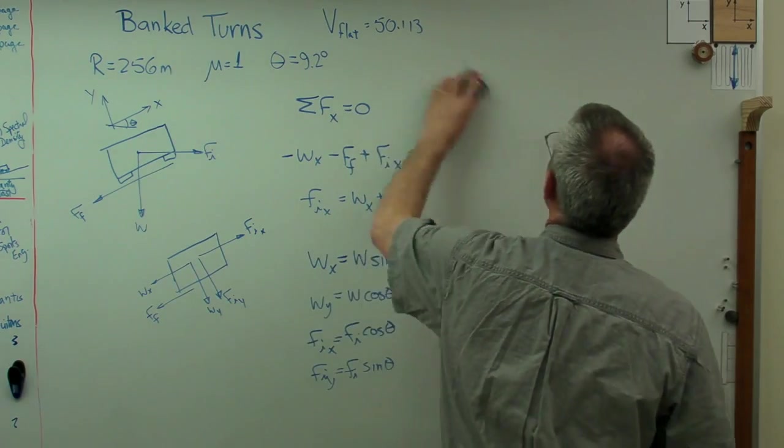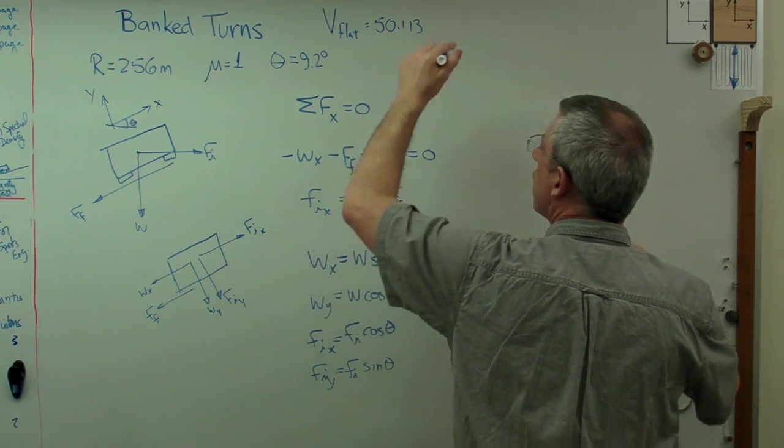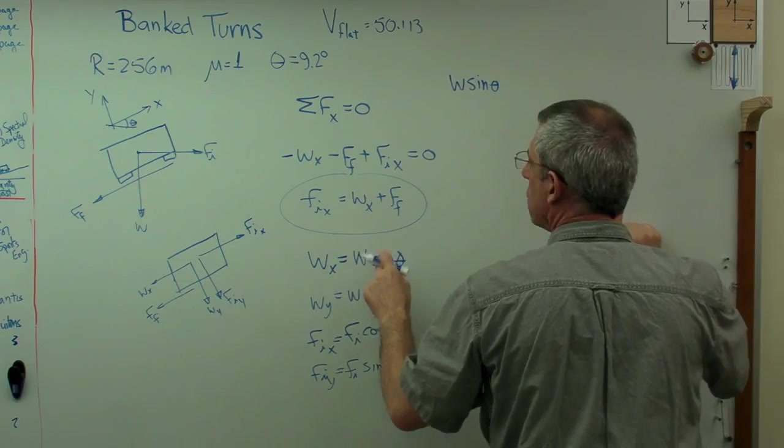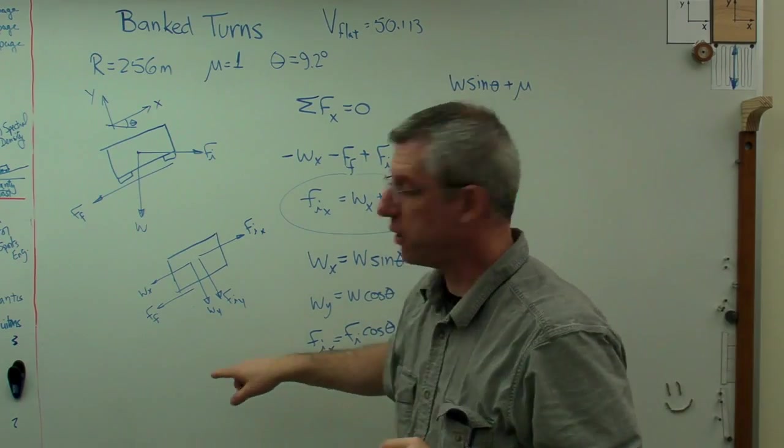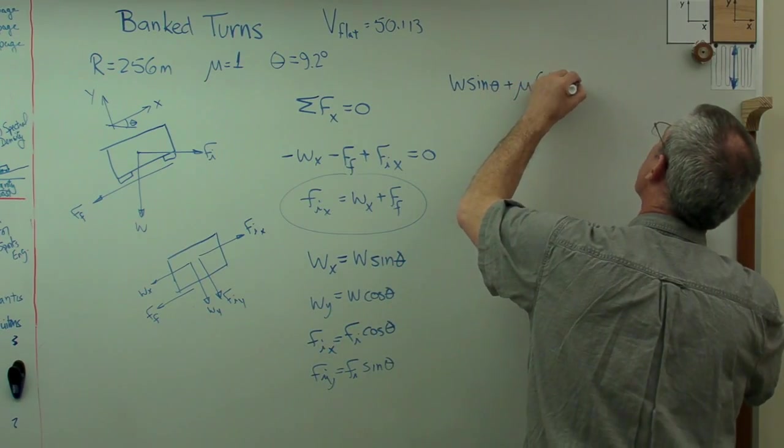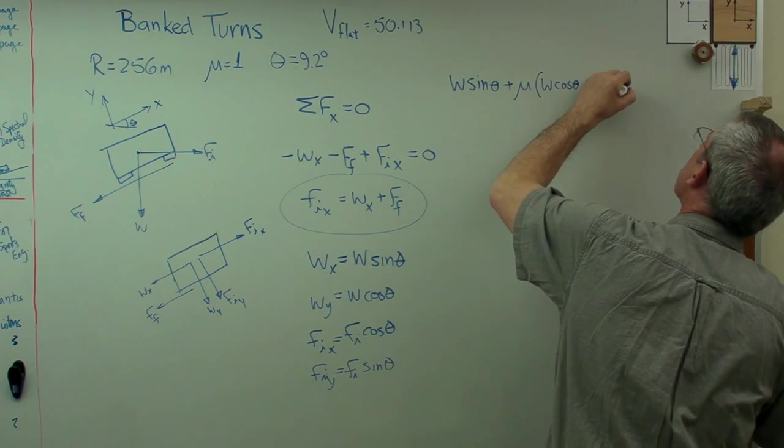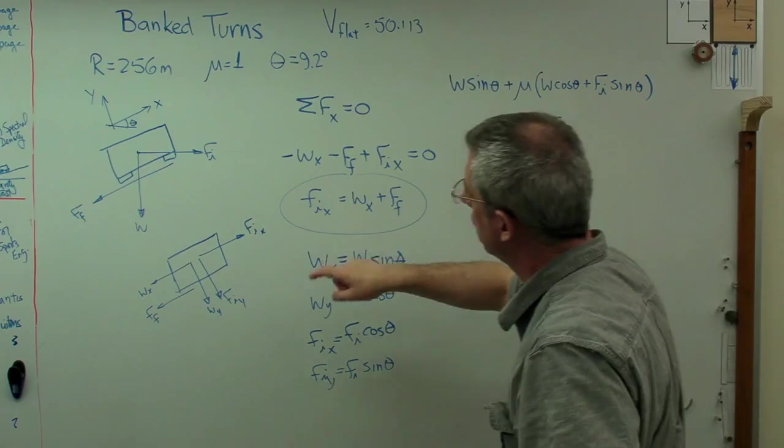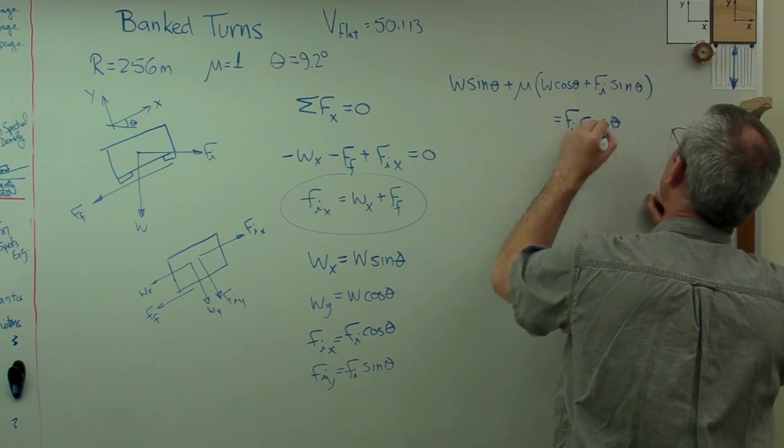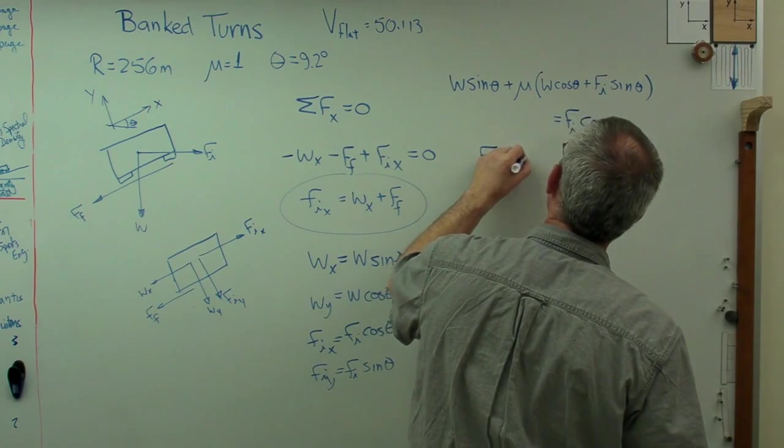I'm going to write it all the way down here and then we'll have an equation to solve. W_x is w sine theta plus the friction force, that's mu times the normal force, that's mu times that plus that. So that's mu w_y which is w cosine theta plus f_i sub y plus f_i sine theta. And that's going to equal f_i in the x direction, so that's f_i cosine theta. I've got to figure out what to put in for f_i.